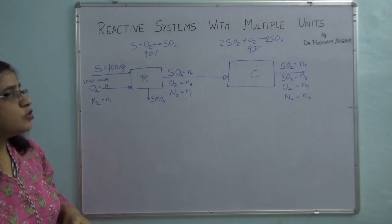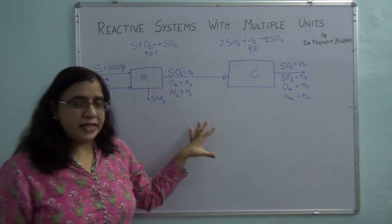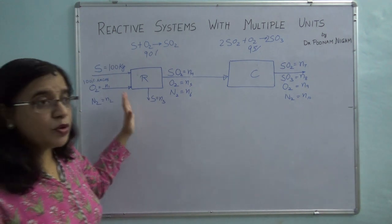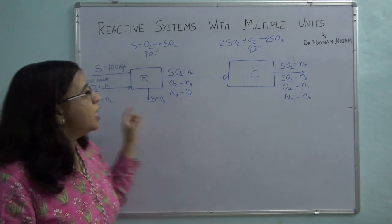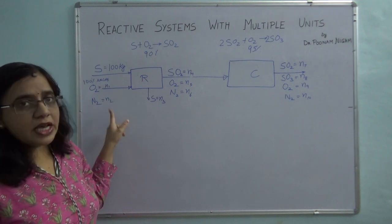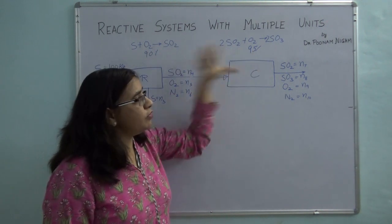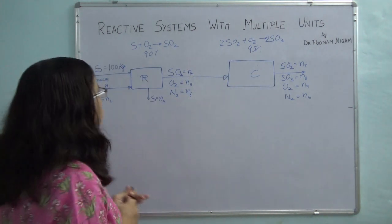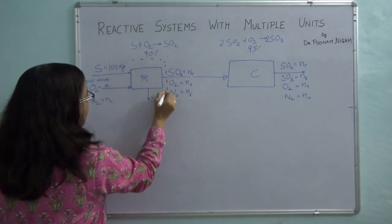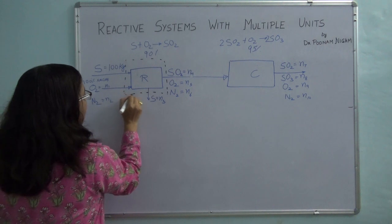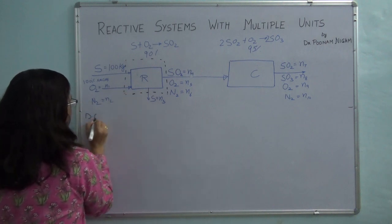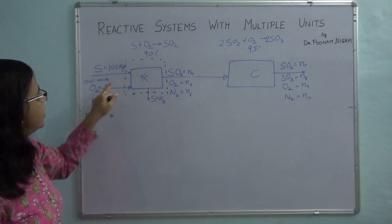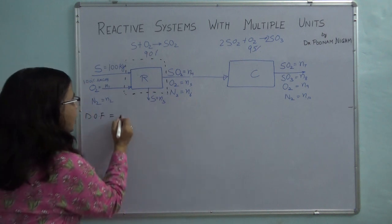Now I will start the problem. I am choosing atomic species balance for this problem. Because we have multiple units, we have a choice: either start with the overall system or solve unit by unit. Let's check the degree of freedom. For the reactor, doing degree of freedom analysis for atomic species balance: I have 6 variables in total.